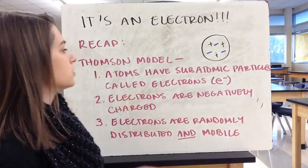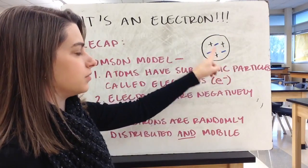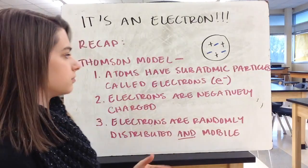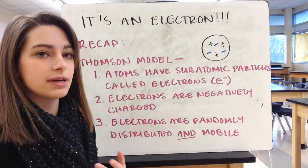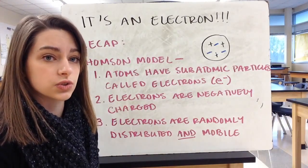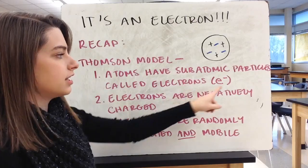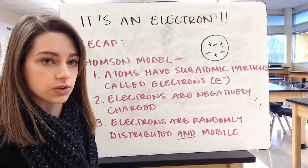That means our negative charge is an electron. That's what it was named. So Thomson's model has an overall positive body with negative charges, which we call electrons, randomly distributed. So there are three main features. Atoms now have subatomic particles. They have internal structure. And those subatomic particles are called electrons. They can be abbreviated E with a little negative sign because they're negatively charged particles.